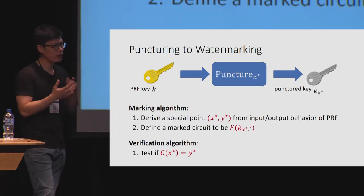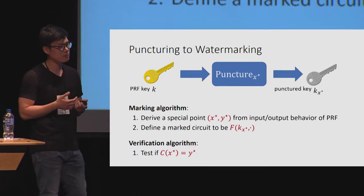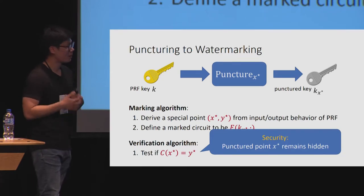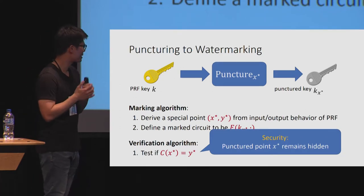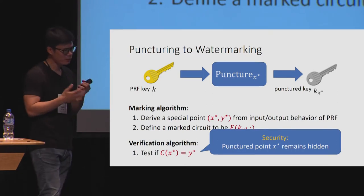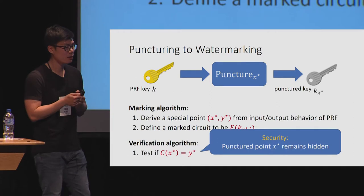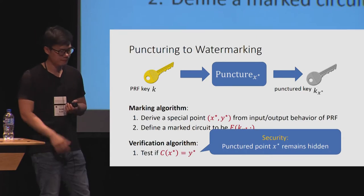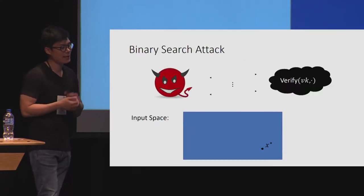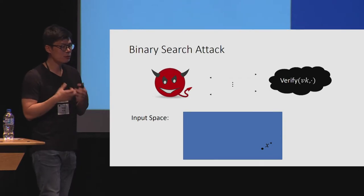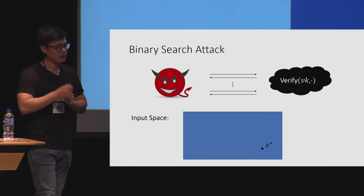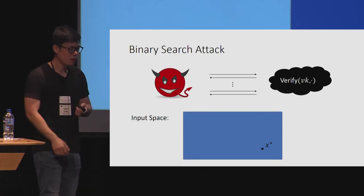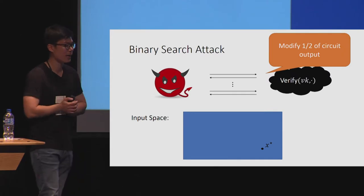If you don't care about the verifier rejection problem, this is a perfectly fine watermarking scheme for the PRF. The security relies on the special point X star remaining hidden from the adversary, which is guaranteed by a privately puncturable PRF. However, if the adversary has access to the verification oracle, then even with a privately puncturable PRF, the special point X star is completely revealed to the adversary.